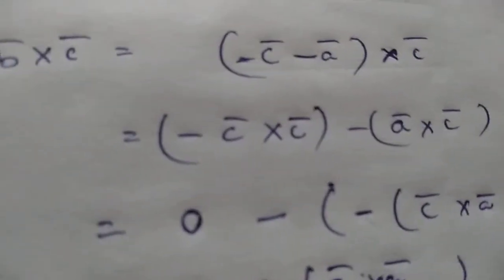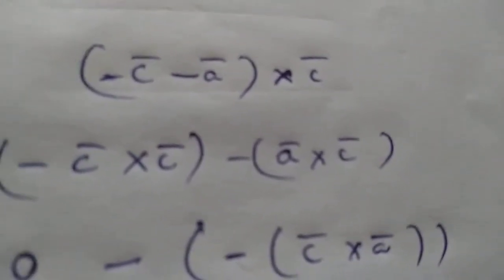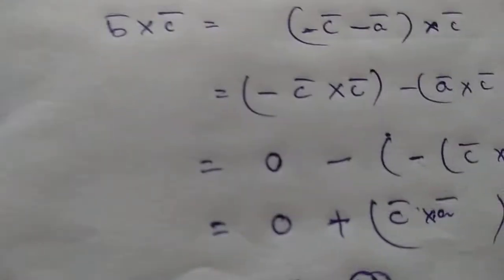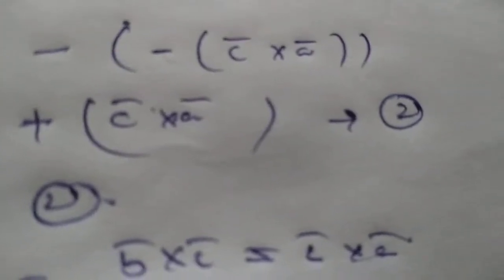Now find b̄ × c̄. Since b̄ = -c̄ - ā, we get b̄ × c̄ = (-c̄ - ā) × c̄ = -c̄ × c̄ - ā × c̄. The same-vector cross product is 0, so this becomes -ā × c̄. Changing sign: -ā × c̄ = c̄ × ā. So b̄ × c̄ = c̄ × ā. This is equation number 2. From equations 1 and 2, ā × b̄ = b̄ × c̄ = c̄ × ā.